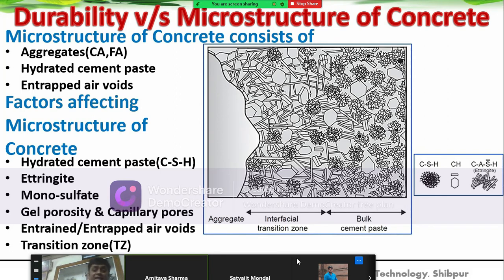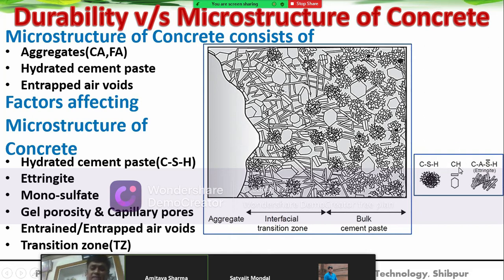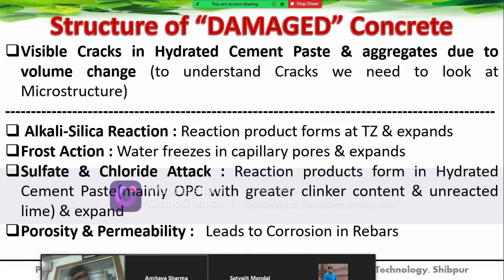Factors affecting the microstructure: in the hydrated cement, CSH gel and ettringite are formed as crystalline products, and monosulfate is also formed. Gel porosity and capillary pores are important—many capillary pores means more permeability; fewer capillary pores means less permeability. Entrapped air voids play a role in durability. The transition zone between the cement paste and the stone aggregate surface is the interfacial transition zone. In the bulk cement paste, CH (calcium hydroxide) and ettringite are the key products.